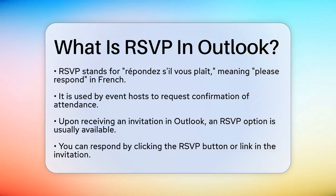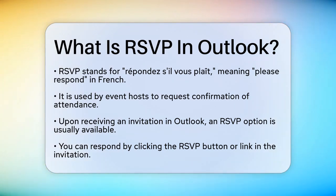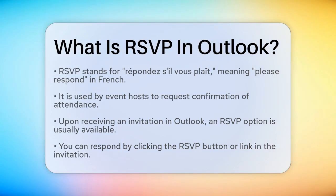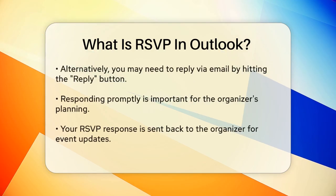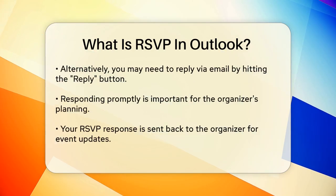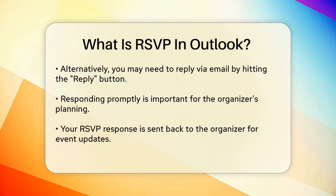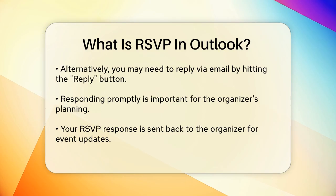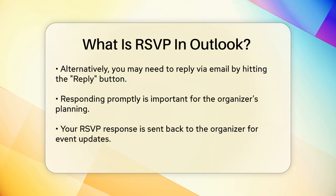When you receive an invitation in Outlook, you'll often see an RSVP option. This is your chance to tell the organizer if you're coming or not. If the invitation includes an RSVP button or link, you can simply click on it and follow the prompts to respond.